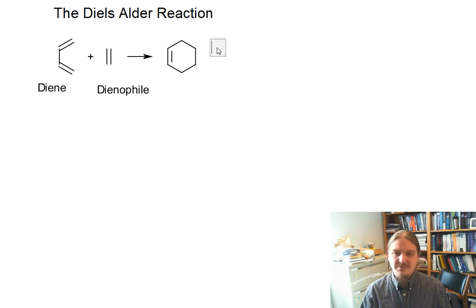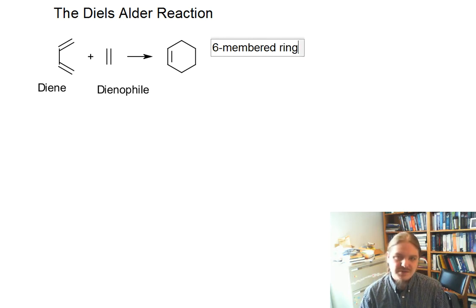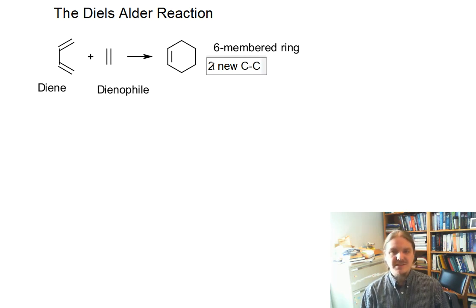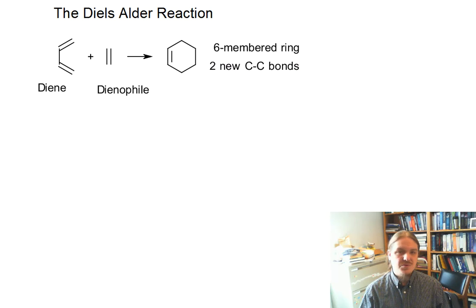The outcome of a six-membered ring, cyclohexene, is a really important outcome because we don't often see these things getting constructed, and so now we have a way to do so. We form two new carbon-carbon bonds, which is pretty cool.